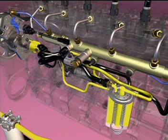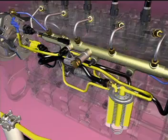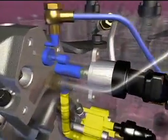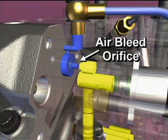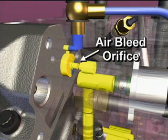Fuel from the filter returns to the actuator housing. An air bleed orifice in the housing allows a small amount of fuel to flow to the drain. Any air in the fuel is pushed through this orifice and prevented from entering the high pressure pump.